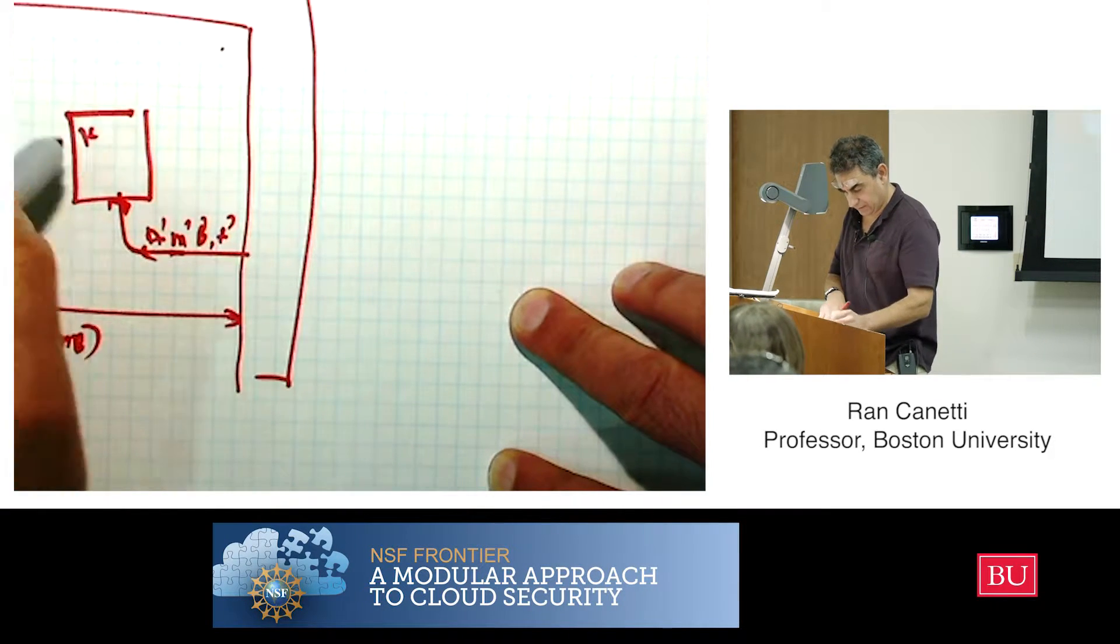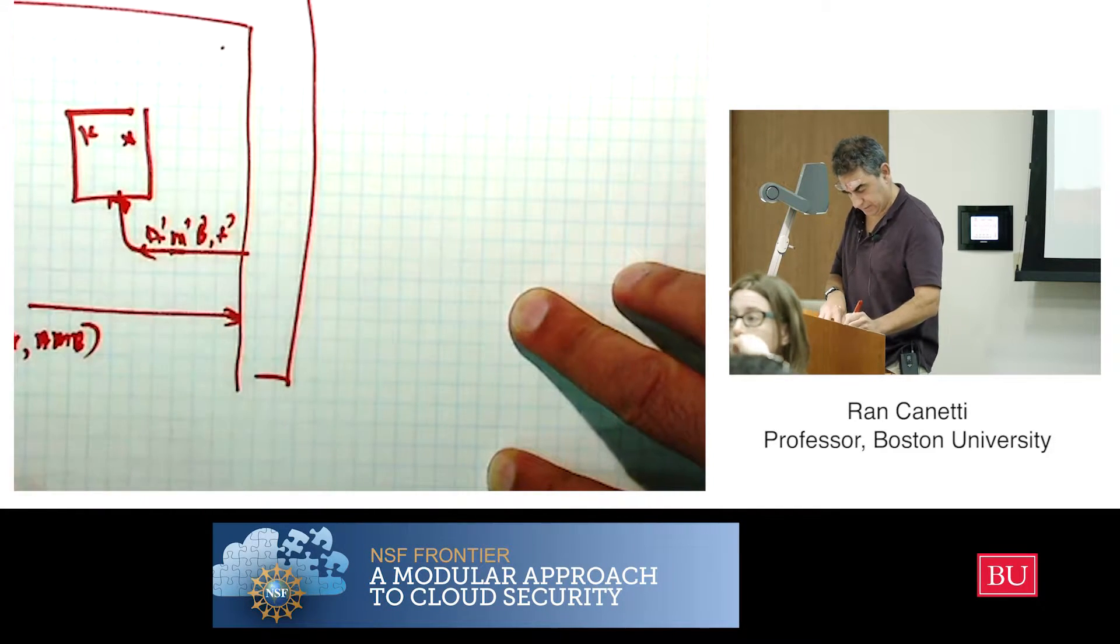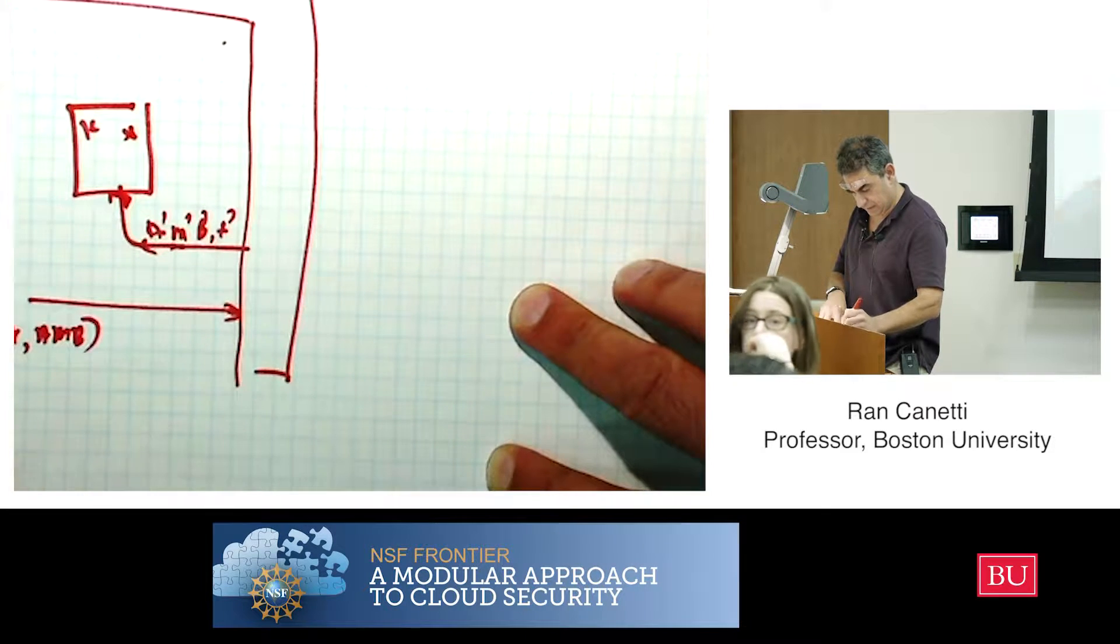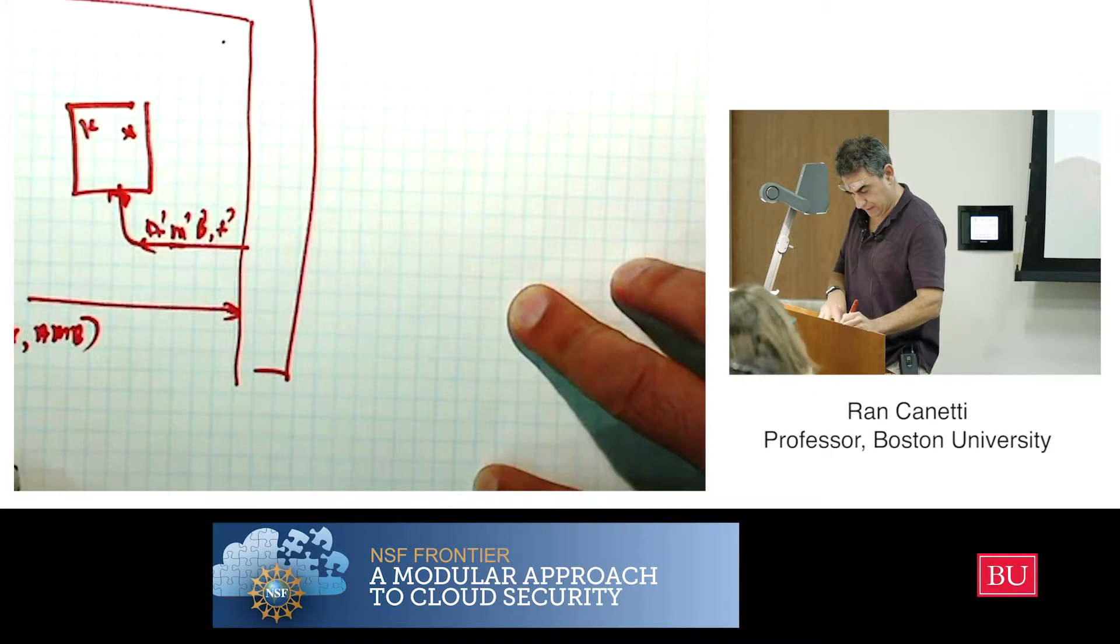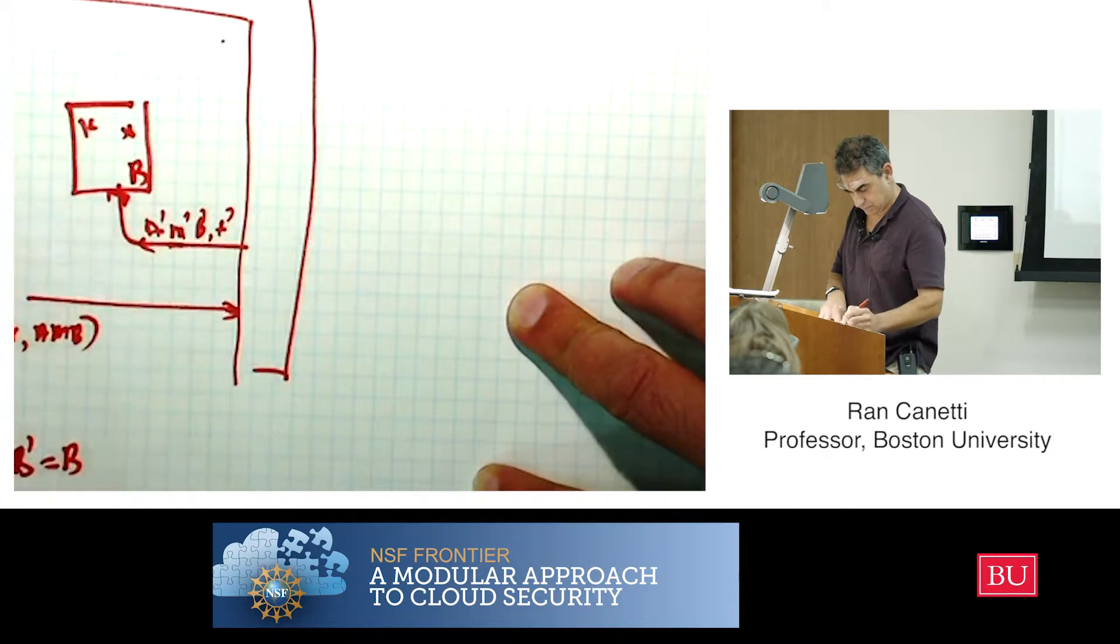And this guy now makes the check. Let's write it here. He says, is it true that B tag equals B? Because this guy knows his own identity, which is B.